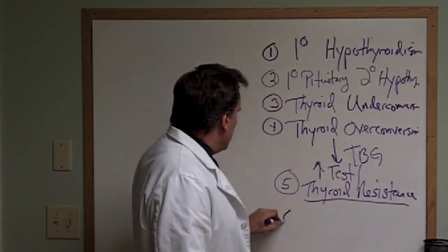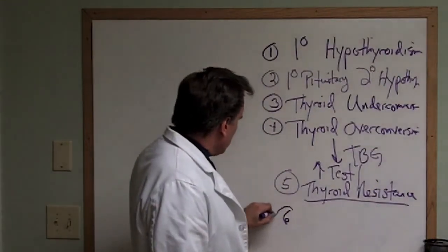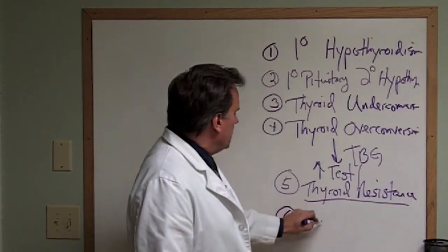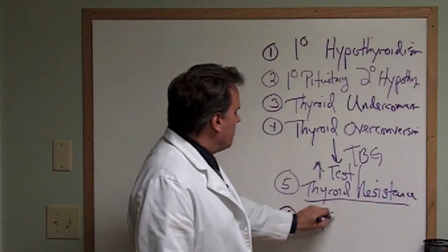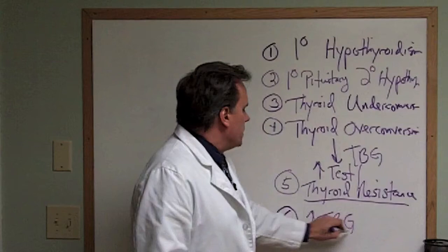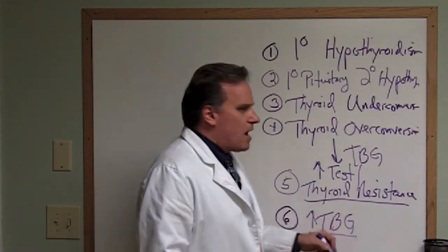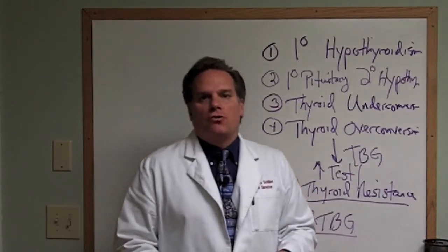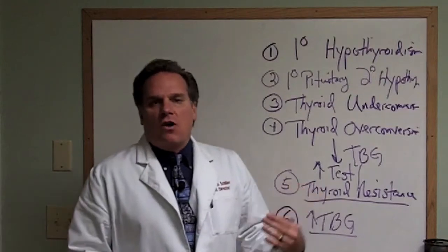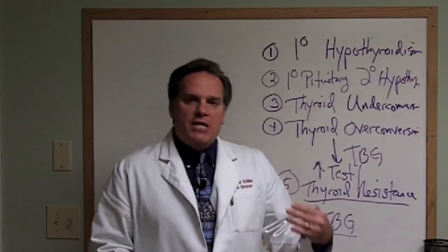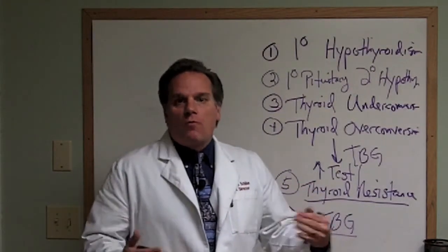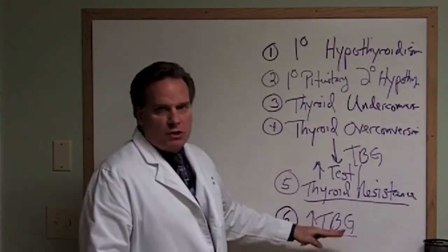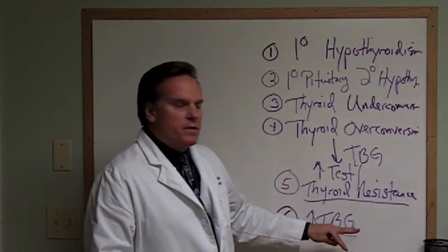The sixth and last pattern is a situation where there's too much thyroid binding globulin. Typically this occurs in women due to a past history of birth control use, or women who are on estrogen, progesterone, or hormone replacement therapies. These cause too much of those thyroid binding globulins.